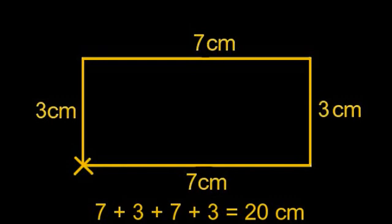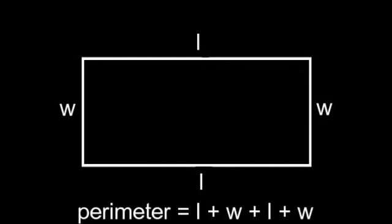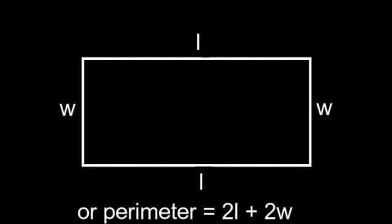That's seven plus three plus seven plus three. For any rectangle with length L and width W, the perimeter is L + W + L + W. We can rewrite this as 2L + 2W, or two times (L + W).